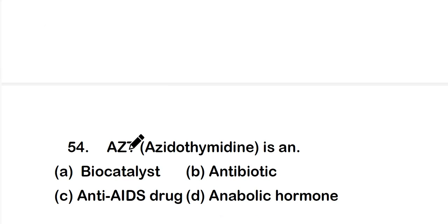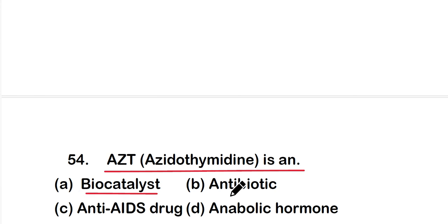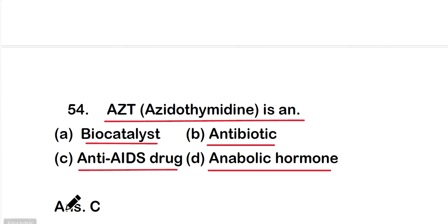Question 54: AZT (azidothymidine) is option A a biocatalyst, option B an antibiotic, option C an anti-AIDS drug, or option D an anabolic hormone. The right answer is option C — AZT is an anti-AIDS drug.